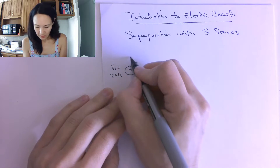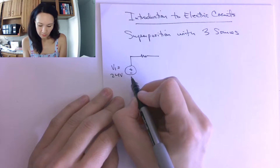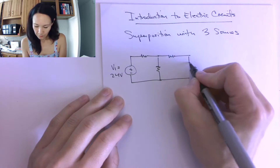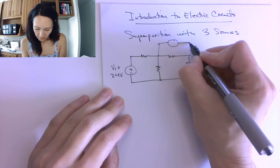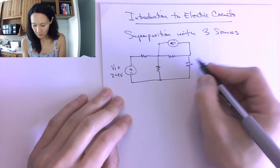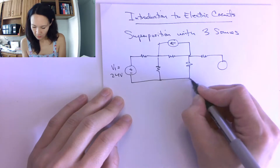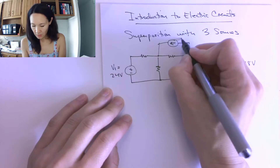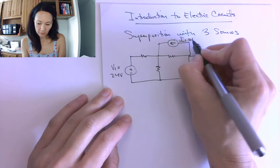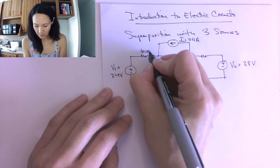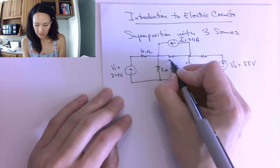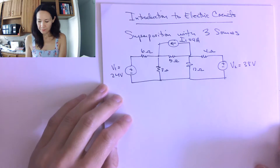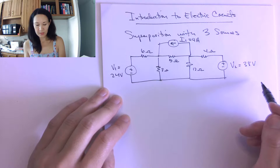So let's say we have a voltage source and some resistors, and let's put a current source up here in this direction. And here's our third source. We'll call this V2, 38 volts. This is I1 — we'll let this be 4 amps. And then we'll give our resistors some values: 6, 3, 5, 12, and 4. So here is a circuit with three sources. We're going to use superposition to solve.